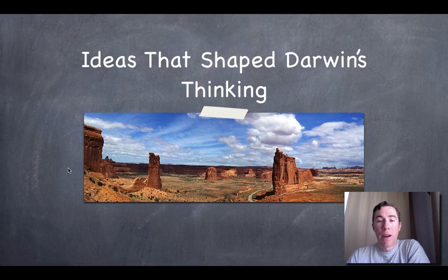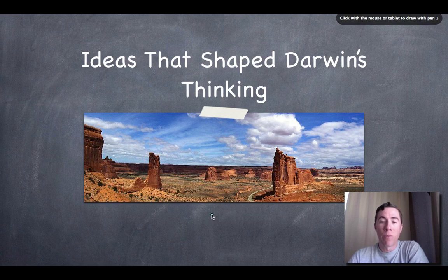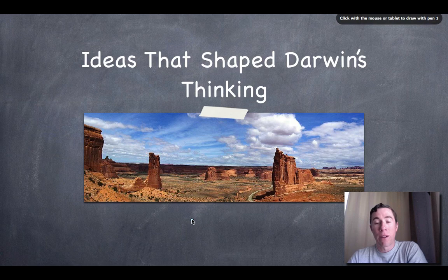Mr. Johnson, and today we'll be talking about ideas that shaped Darwin's thinking. Here is a picture of some rocks in Arches National Park, just outside of Moab, Utah. I put this picture up here so we can get an idea of how rocks are actually formed. Some different geologists during the time of Darwin were looking at rocks and wondering how they formed and how old they really were. And naturalists like Darwin himself were wondering how these organisms actually interact with the geology around them.